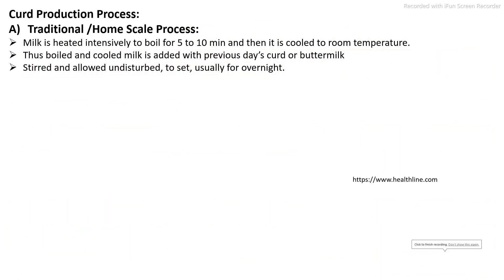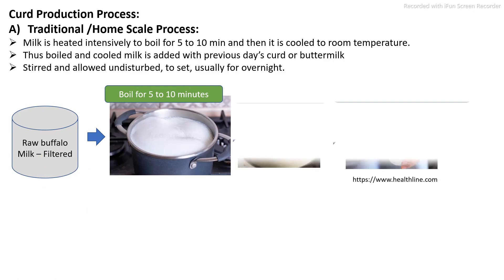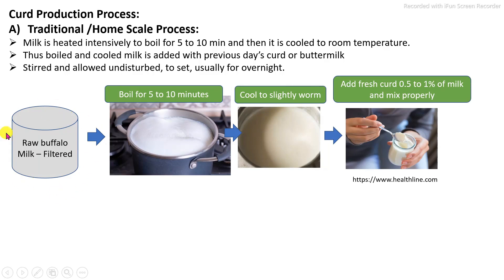For curd production at traditional or small scale, first the raw milk quality with respect to fat and SNF determines the final curd quality. If the fat content is high in raw milk, we get good consistency of curd. The first step is pre-processing: filtration or clarification, then boiling for 5 to 10 minutes to inhibit pathogenic microbial load. After that, milk is cooled to 35 to 40 degrees Celsius. Then culture is added — either as a fresh culture or a previously prepared curd — and the quality of that culture is very important.